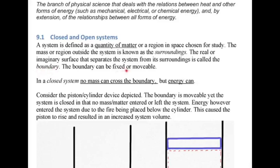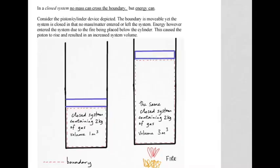The boundary can be fixed or movable. In a closed system, no mass or matter can cross the boundary, but energy can. As an example, let's consider a cylinder with a tight-fitting piston — frictionless, but with a perfect seal. The blue represents the piston, which is round, and the cylinder is round, and the piston would rise and fall as the pressure changed in the volume below.